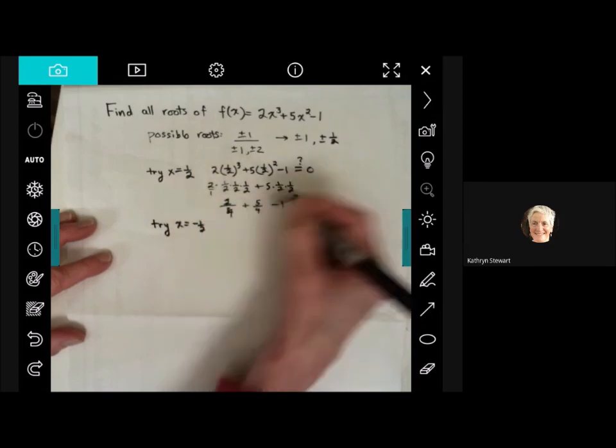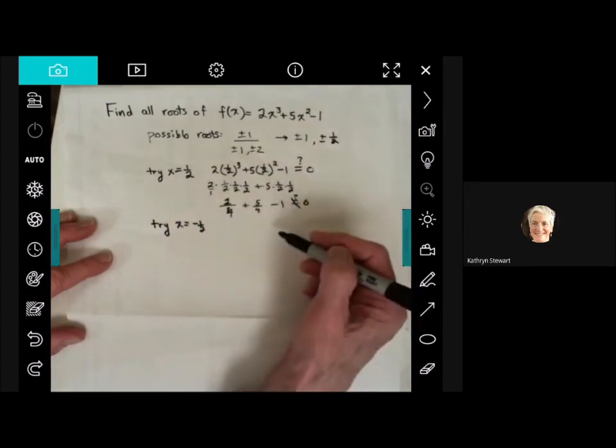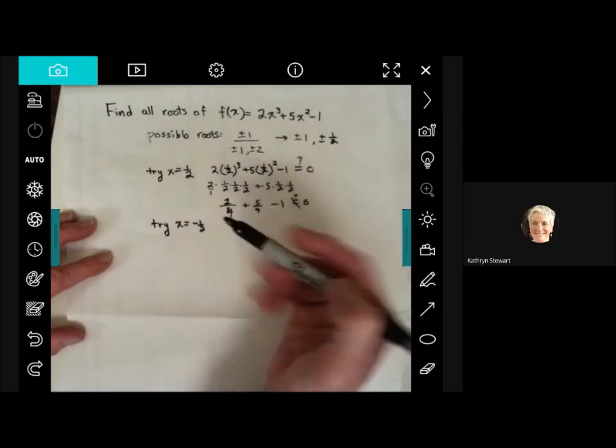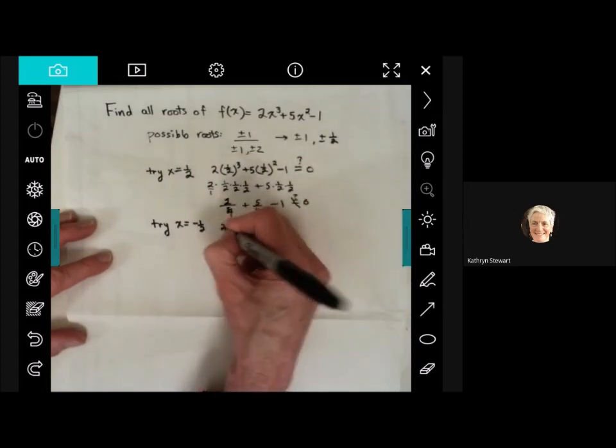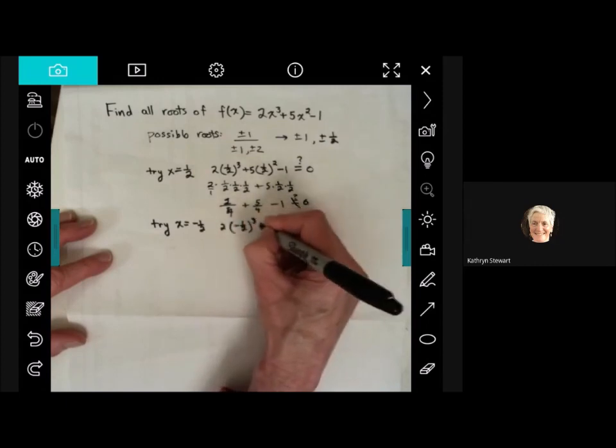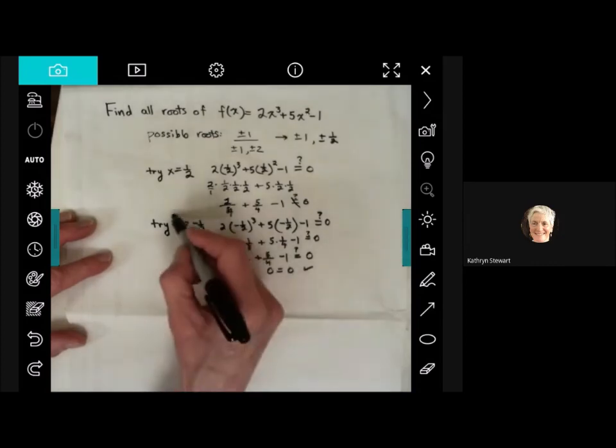Let's try x equals negative 1 half. If this doesn't work, then that means I'm out of luck. That means this does not have any rational roots, so this strategy I'm using would not work. So let's hope negative 1 half works. And it works! And there's much rejoicing. So I have found a root.